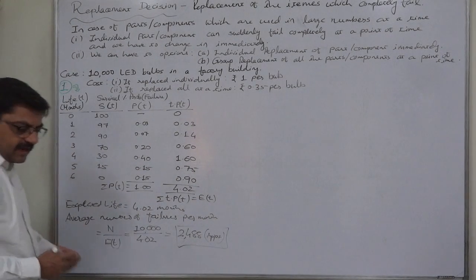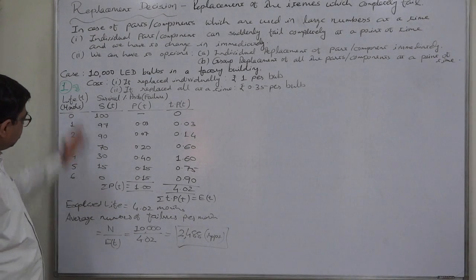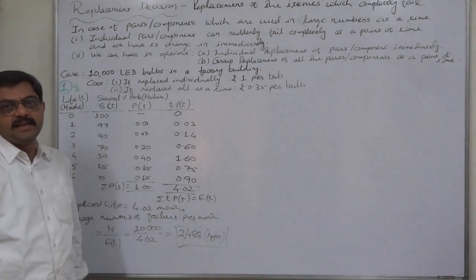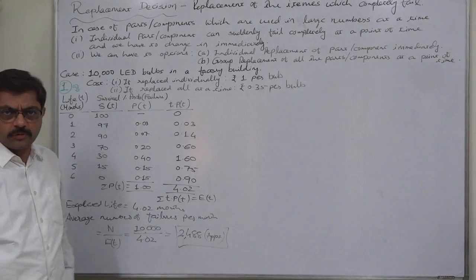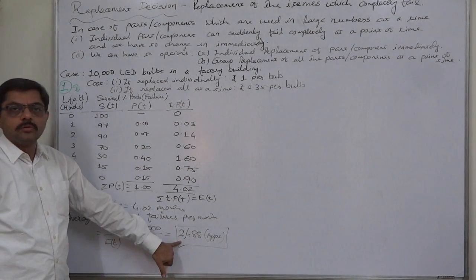We can expect that by individual replacement, on an average within 6 months, we will be replacing 2,488 bulbs or parts or components, whatever the case may be. So we have to replace these number of bulbs every month at a cost of rupee 1.